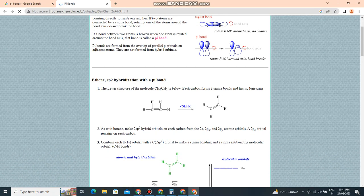If a bond between two atoms is broken when one atom is rotated around the bond axis, that bond is called a pi bond. Pi bonds are formed from the overlap of parallel p orbitals on adjacent atoms. They are not formed from hybrid orbitals.